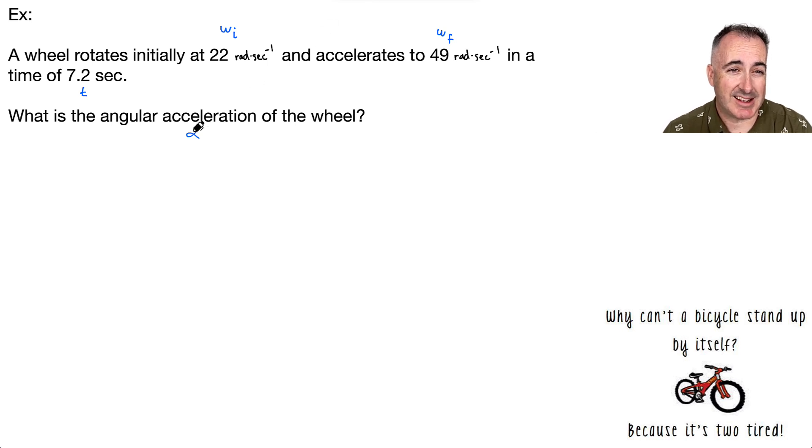So we're going to really just try to find an equation that has alpha in it, that ideally doesn't have delta theta anywhere. So find us an equation that doesn't have any delta theta. And the one I would use is the one that goes v equals u plus at.